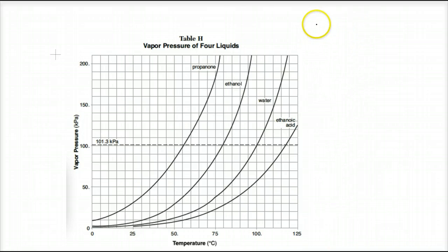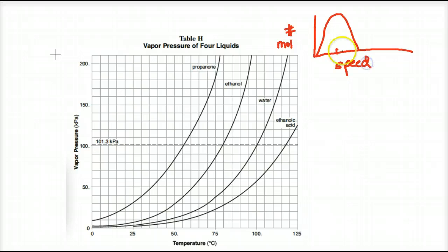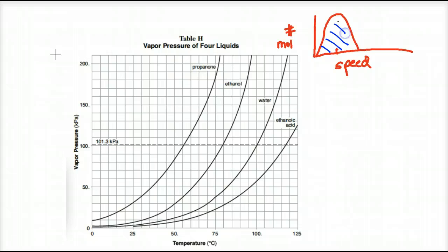What is evaporation? I taught you earlier something called distribution — Boltzmann distribution graphs. When we have a cold liquid, we see the distribution of number of molecules on one axis and the actual temperature range or speed on the other. We know that when the temperature increases, the area under the curve stays constant — this area represents the number of particles at different speeds, some at the average, some below and above.